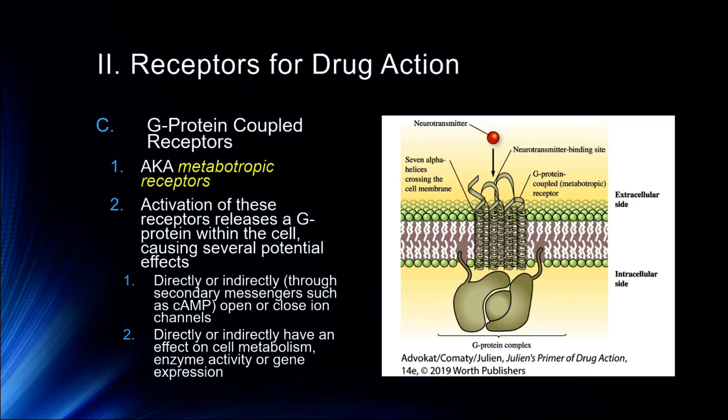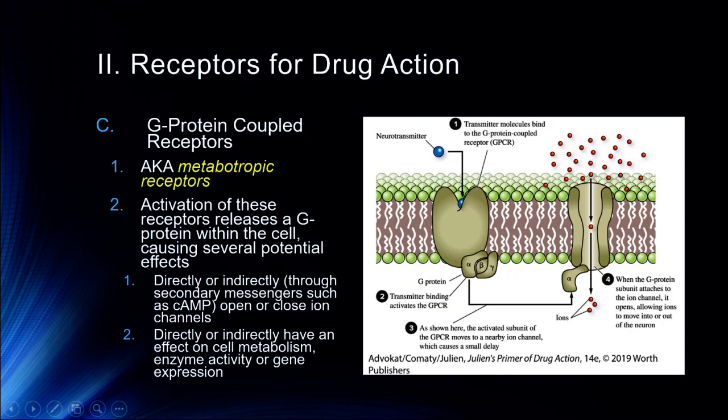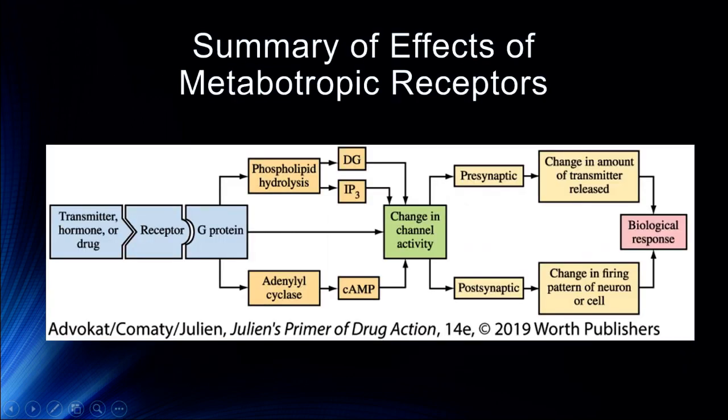With a G-protein complex, a neurotransmitter binds to the receptor site, which then triggers release of that protein inside the cell. This can have an effect on the neurotransmitter or the receptor itself, or it can travel to another ionotropic receptor channel and open or close it, affecting the probability of generating an action potential. In summary: a transmitter, hormone, or drug binds to the receptor; the G-protein is released and can affect channel activity, neurotransmitter release amounts, firing patterns, and produce a biological response.